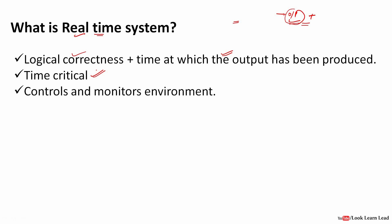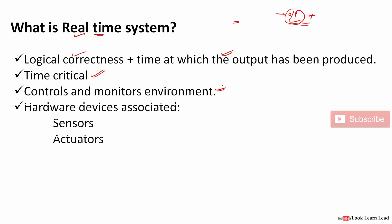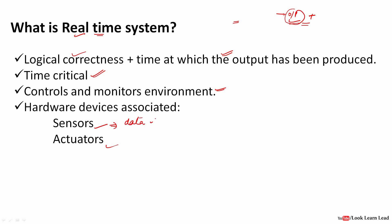Generally, a real-time system controls and monitors the environment — those are the two main functions it performs. The hardware used in real-time systems includes sensors and actuators. A sensor is used for data collection from the environment, whereas an actuator is used for changing the environment.